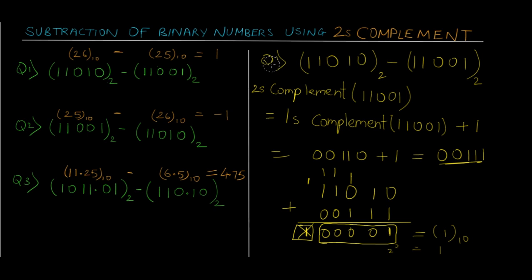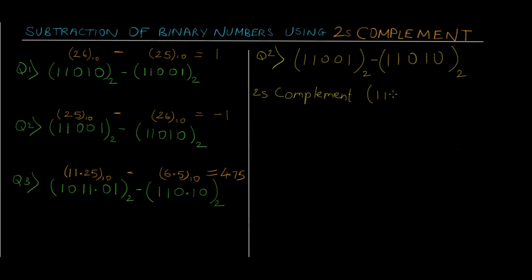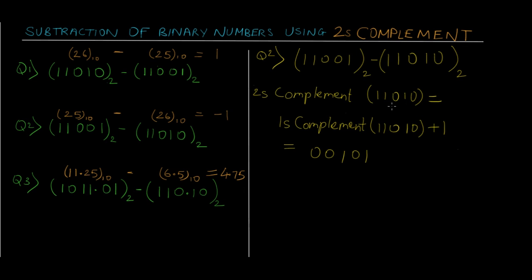In question number 2 we have 11001 in binary minus 11010 in binary. The decimal values are already written, so it should give us a negative answer. Let's start solving: we have to first take 2's complement of the second number. 2's complement of 11010 equals 1's complement of that same number plus 1, giving us 00101 plus 1.